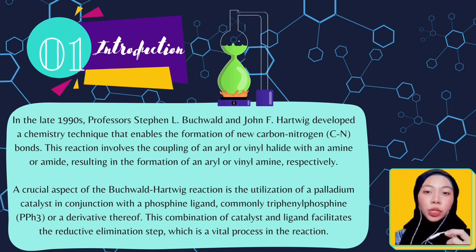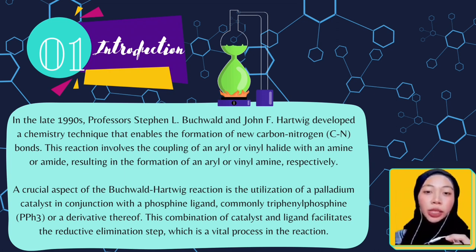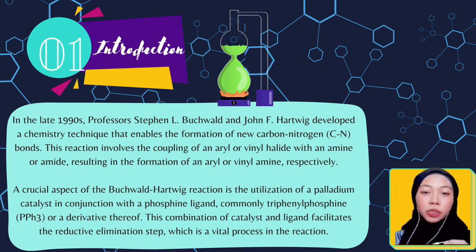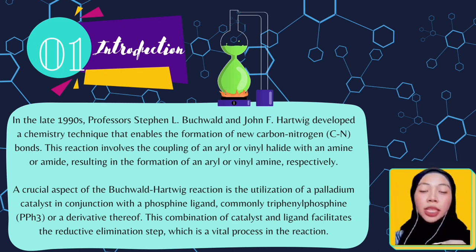The crucial aspect of the Buchwald-Hartwig reaction is the utilization of a palladium catalyst in conjunction with a phosphine ligand, commonly triphenylphosphine (PPh3), or a derivative. This combination of catalyst and ligand facilitates the reductive elimination step, which is a vital process in the reaction.